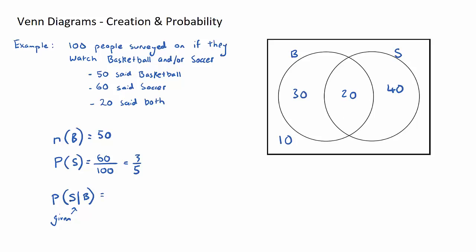This asks, how many people watch soccer given that they watch basketball? So we're only interested in the basketball set. We're no longer interested in this or this, we're only interested in these 50 people here. Now, how many of those 50 watch soccer? 20. How many people are the total? It's not 100, we're only interested in this 50. So it's going to be 20 on 50, and that is two-fifths.